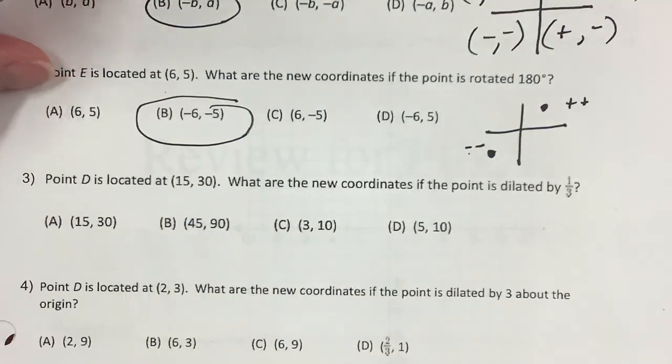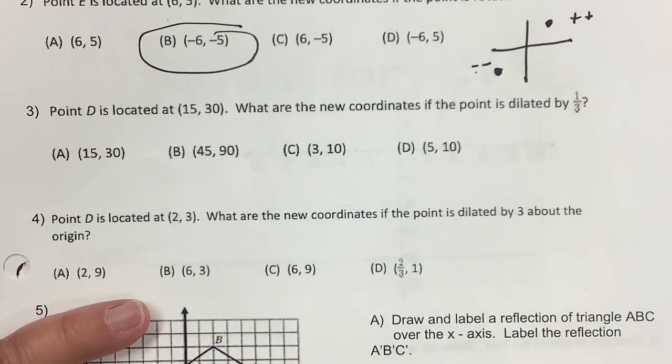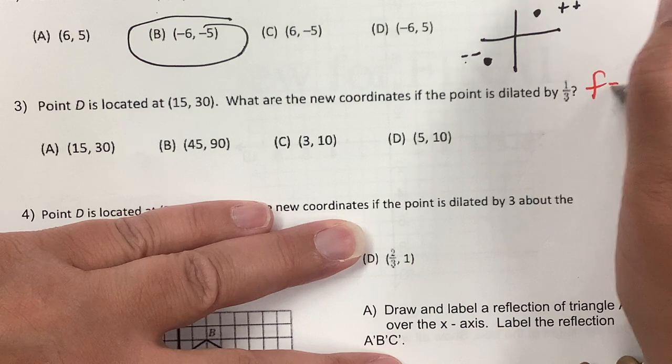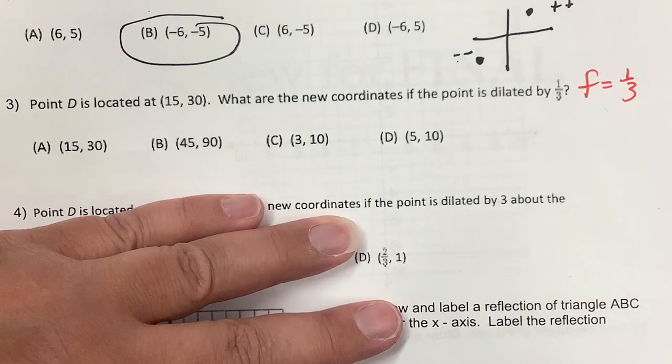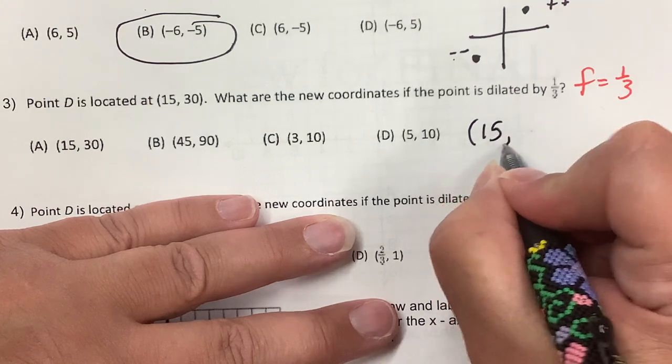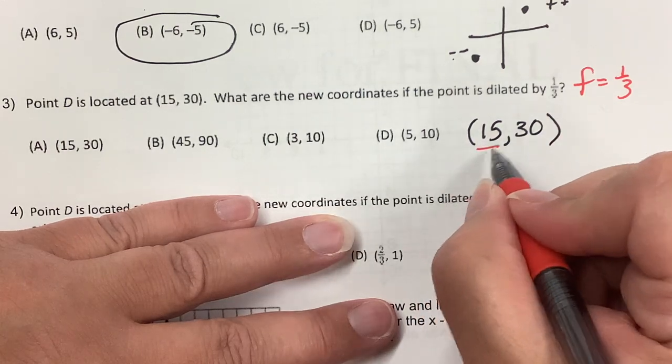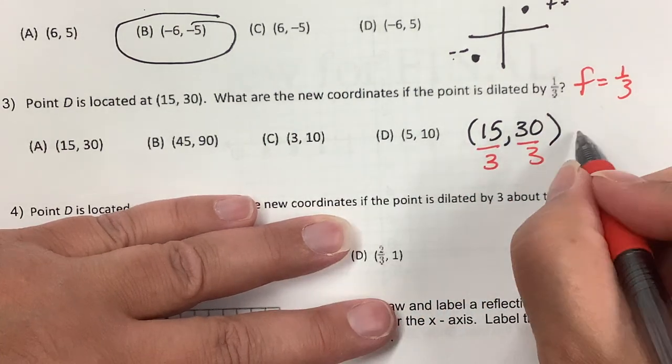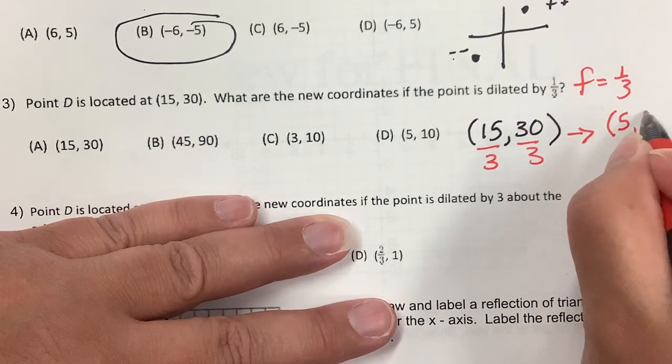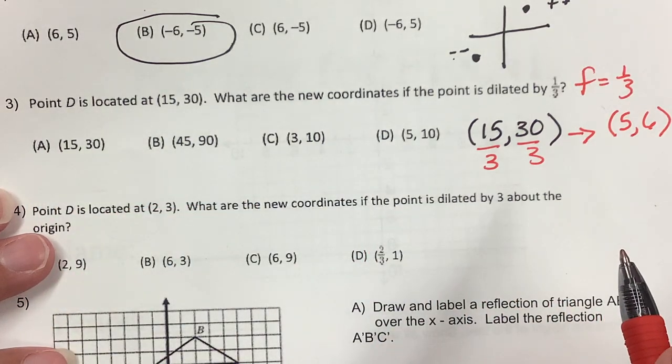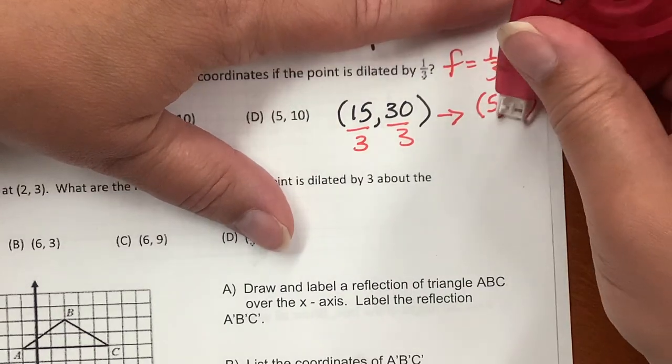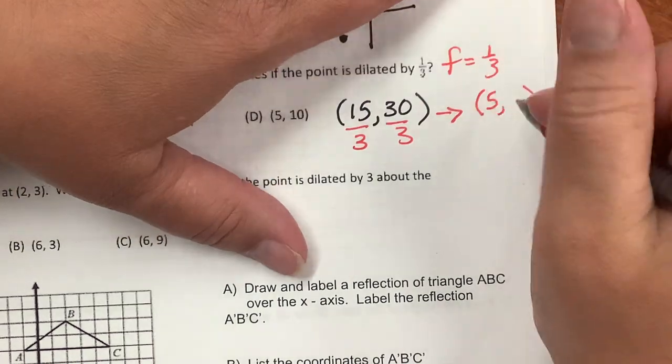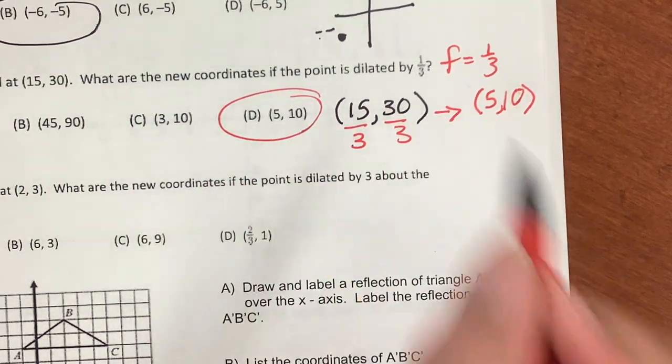Point D is at 15, 30. If it's dilated by one-third, that means F equals one-third. When you're multiplying by one-third, that's the same as divide by three. So if I have this point 15, 30, and I divide each one by three because that's a scale factor of one-third, I am going to get 5, 10. Wait - I divided 30 by 3 and got 6. My apologies. 30 divided by 3 is 10. So I need 5, 10, which is D.